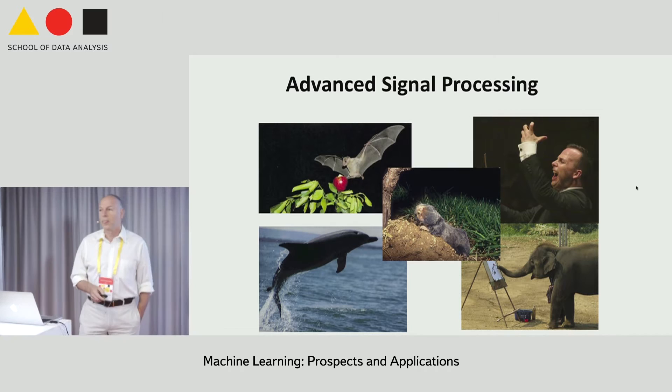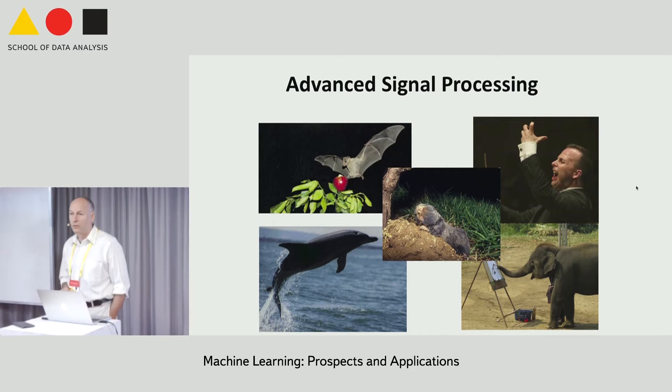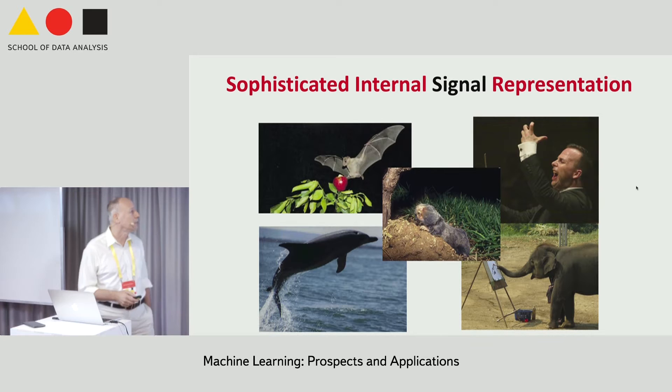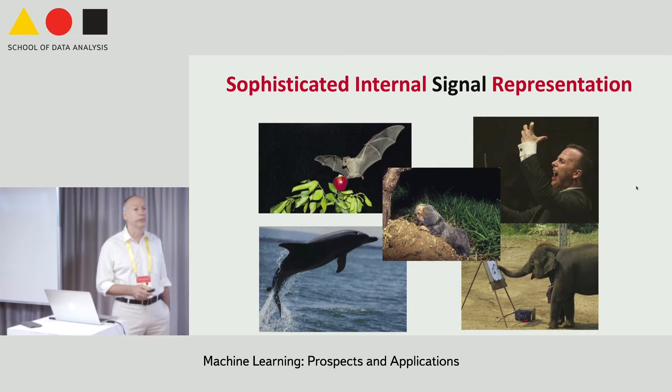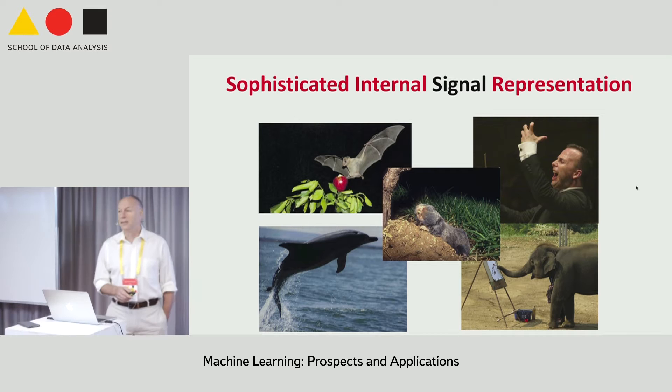Each of these animals is performing computation far better than what we can do, and what our machine learning or signal processing can do. So it makes sense to try and understand what it is that they are doing. I'll try to put an emphasis on the idea that it's all about a sophisticated representation which makes the calculation be very simple. Let's get into it.